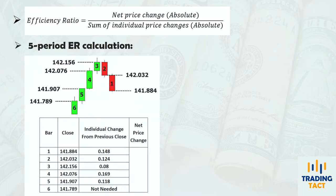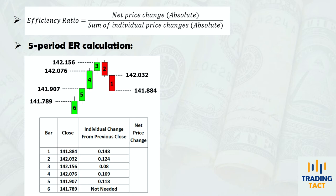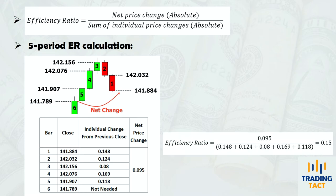Let's do a sample calculation for a five-period efficiency ratio. For each candle, we first calculate the price change from the previous close. Then we take the net change over the lookback period and divide that by the sum of the individual price changes, giving us an efficiency ratio of 0.15 in this case.